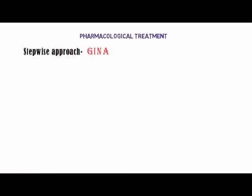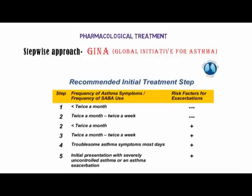Pharmacological therapy is the mainstay of management and follows a 5-step approach from GINA based on frequency of symptoms or short-acting beta agonist use with or without risk factors. Step 1: symptoms less than twice a month without risk factors. Step 2: twice a month without risk factors, or less than twice a month with a risk factor. Step 3: twice a month with a risk factor. Step 4: troublesome symptoms most days with a risk factor. Step 5: initial presentation with severely uncontrolled asthma or exacerbation with a risk factor.